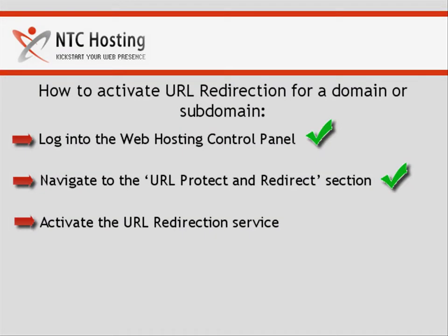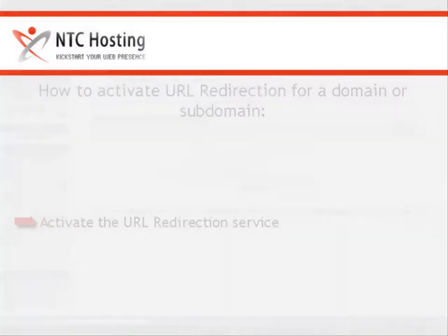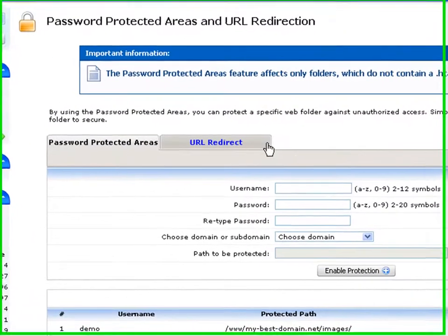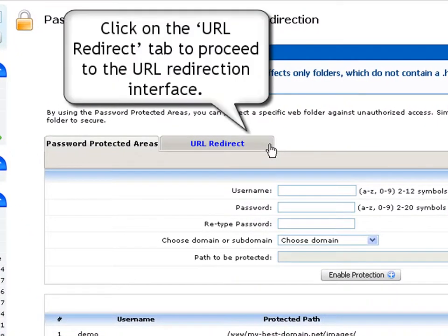Now let's move on to the final step: activating the URL redirection service. Opening the URL protect and redirect section, click on the URL redirect tab to proceed to the redirection interface.